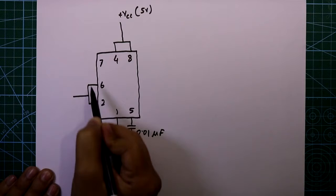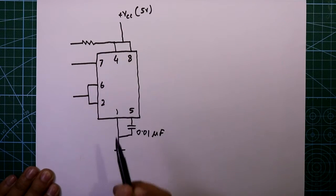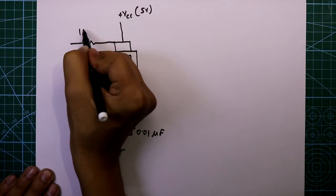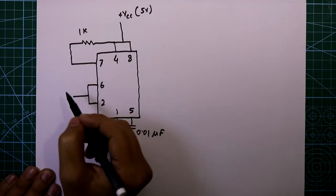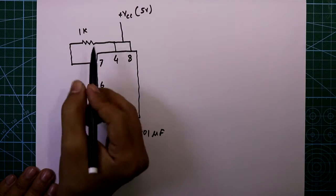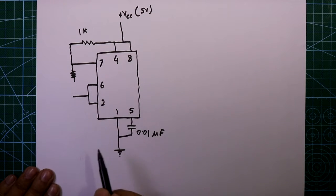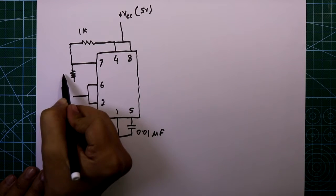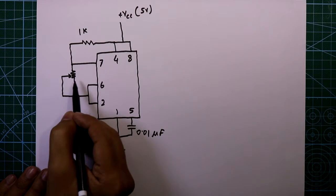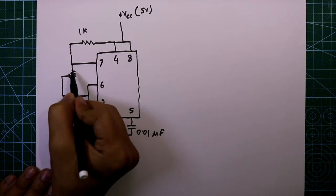One resistor is connected between pin number 7 and plus VCC — the value is 1 kilohm. Another resistor is between pin number 6 and 7; here we will use a variable resistor. The middle pin of the potentiometer will go to pin number 6 and 2, and one end of the potentiometer